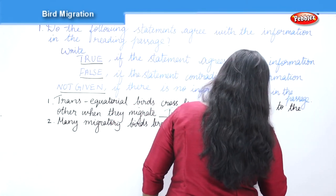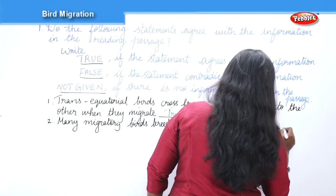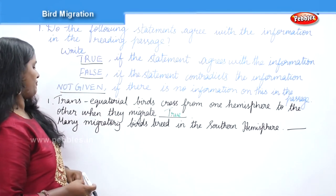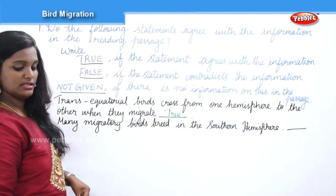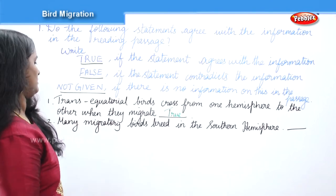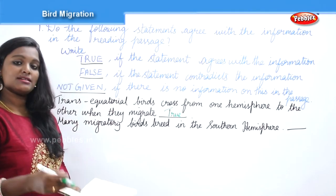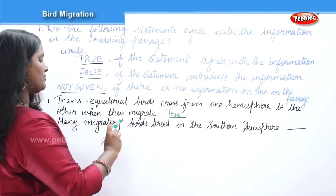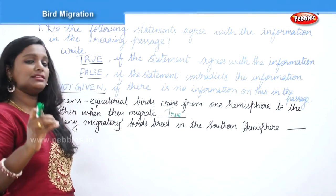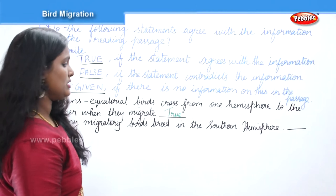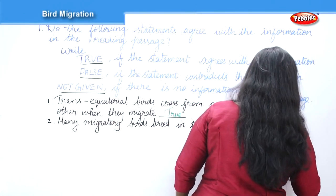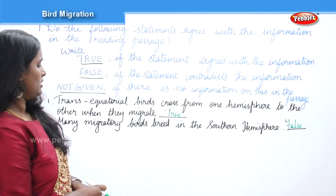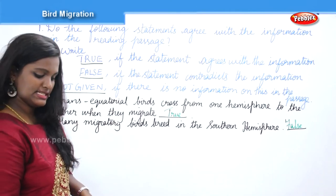Statement: 'Many migratory birds breed in the southern hemisphere.' True or false? The passage clearly says that only seabirds migrate or breed in the southern hemisphere, not land birds. So this would be FALSE.